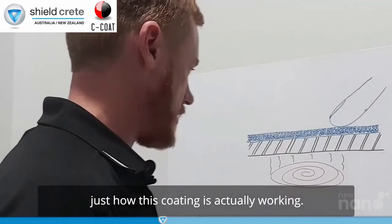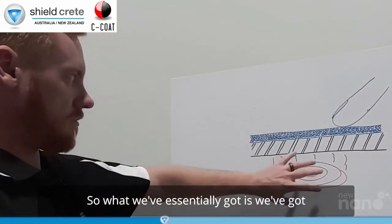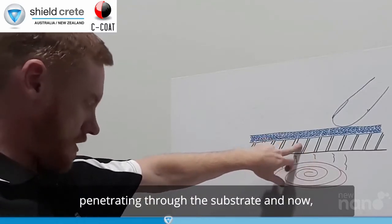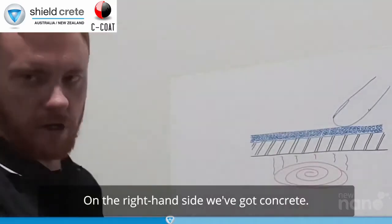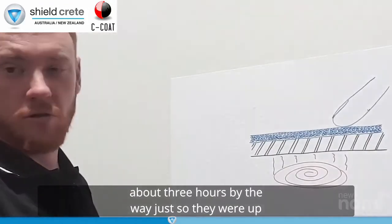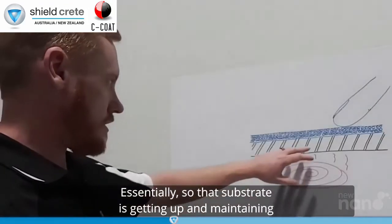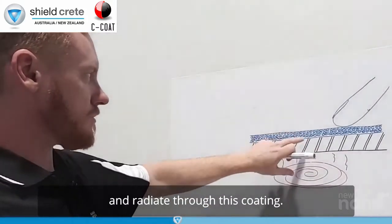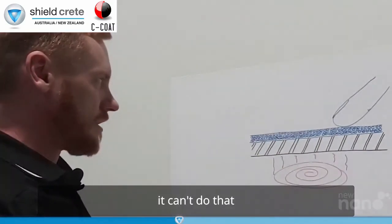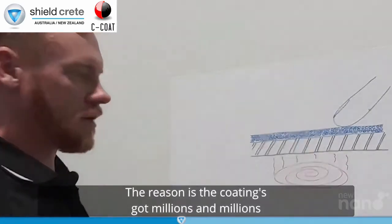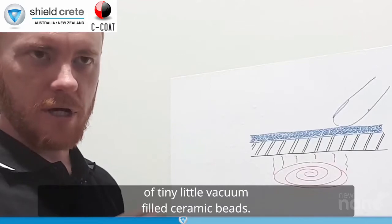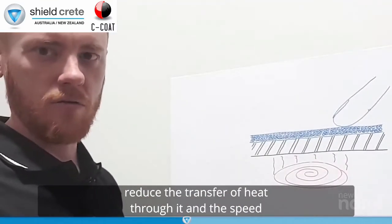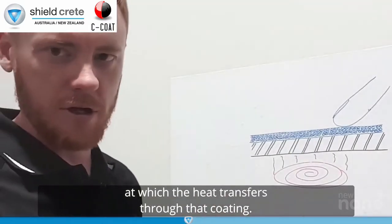We'll try and explain just how this coating is actually working. So what we've essentially got is we've got a heating element on one side. So we've got heat coming up, penetrating through the substrate. Now on the left hand side, it's steel. On the right hand side, we've got concrete. I left these there for about three hours by the way, just so that they were up to a steady state temperature. Essentially, so that substrate is getting up and maintaining whatever temperature this is putting into it. And then the temperature is trying to come through and radiate through this coating. But it can't do that very effectively. The reason is the coating's got millions and millions of tiny little vacuum-filled ceramic beads.